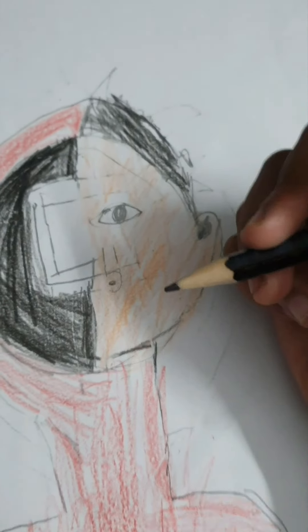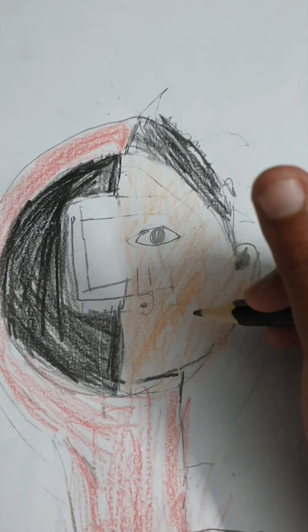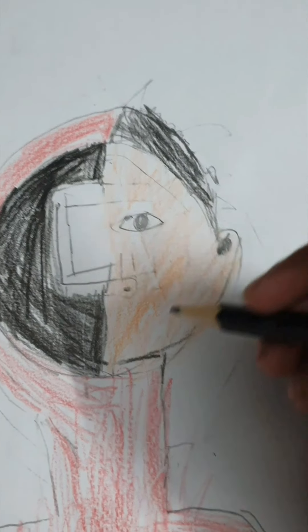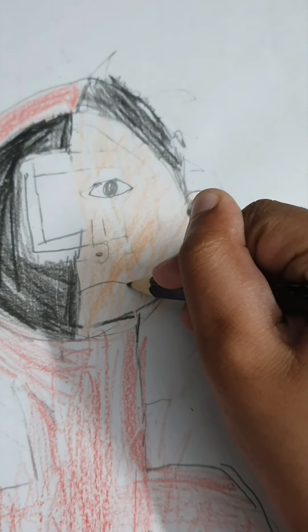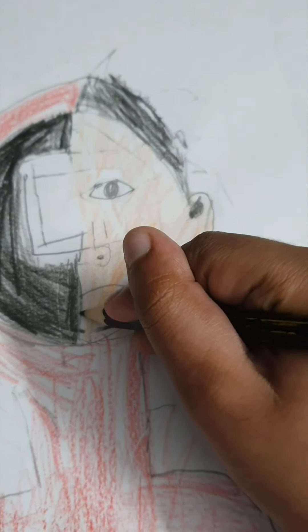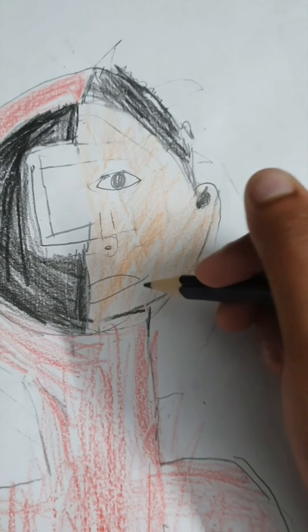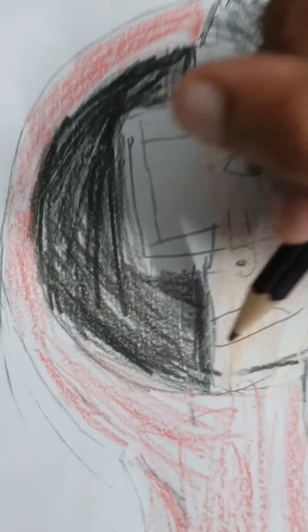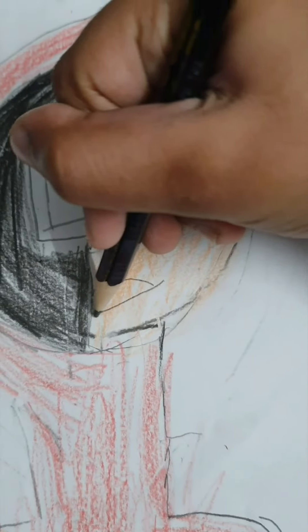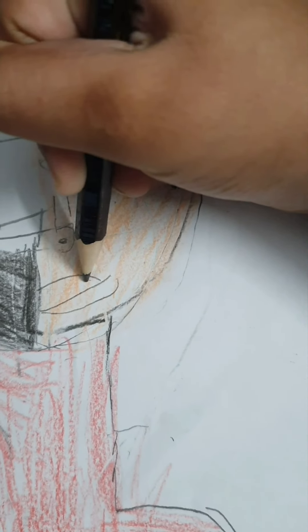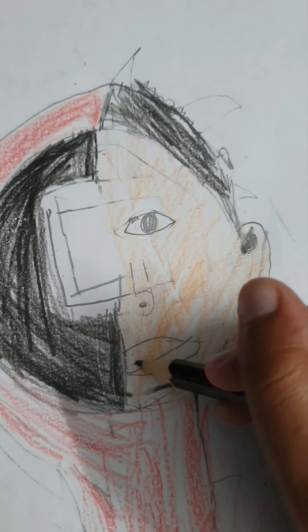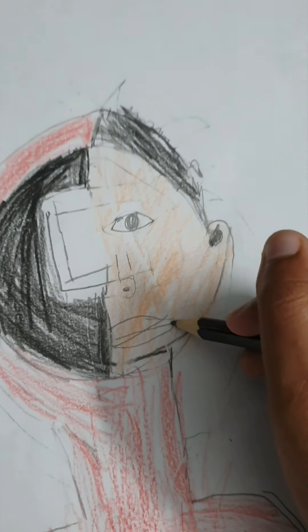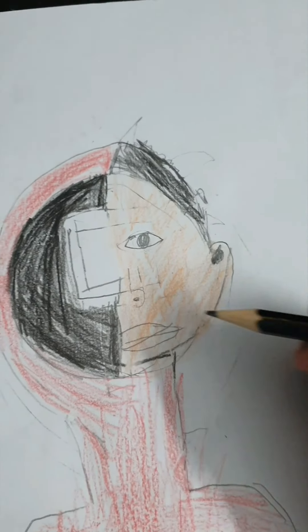We just need to put it, the nodes and the mouth. We just need to start from here. Then we just need to draw a little bit more curve. Then we just need to draw a little bit more.